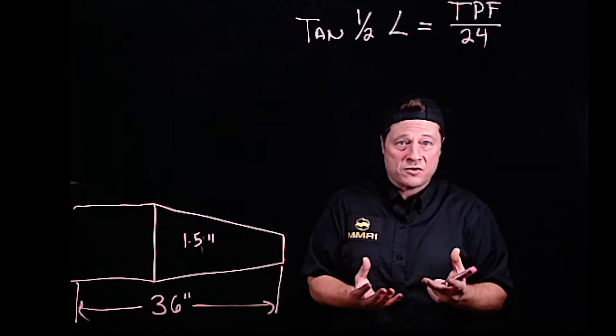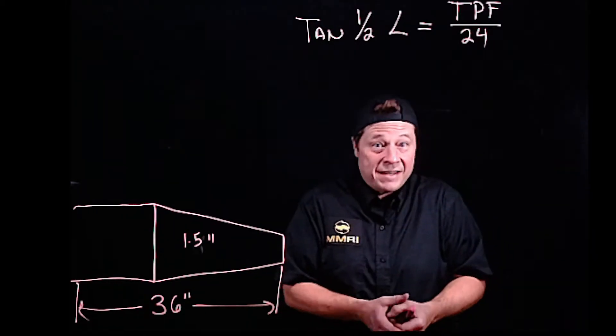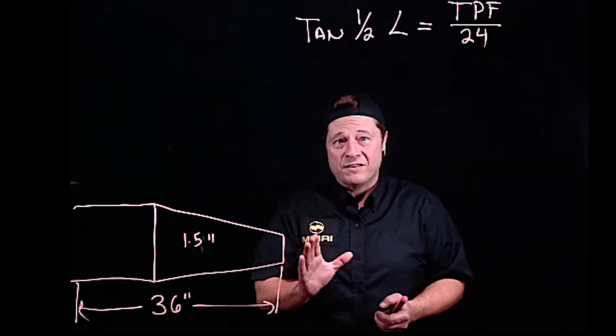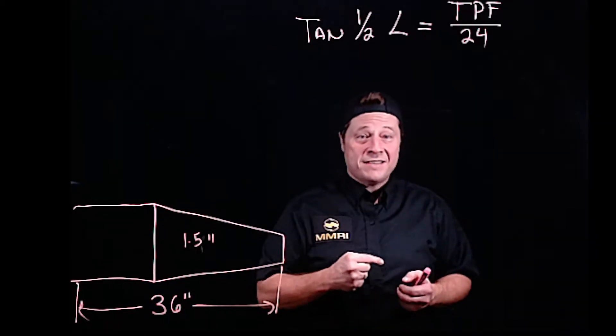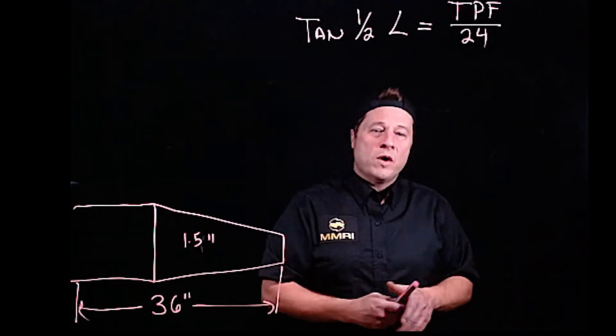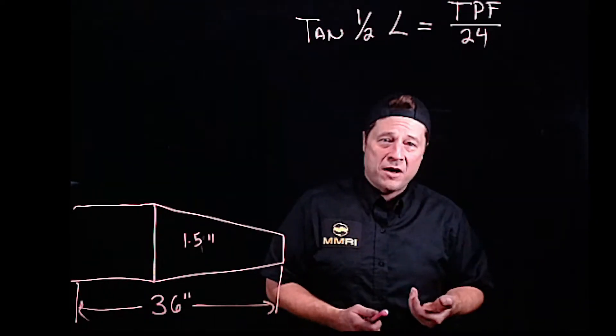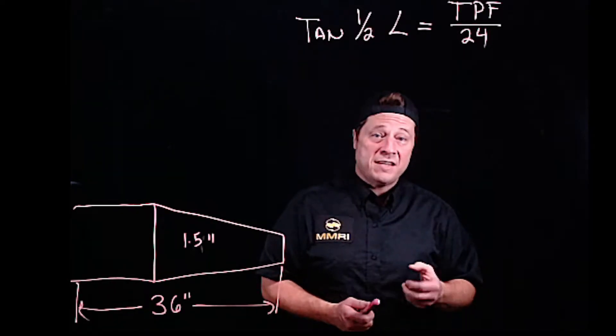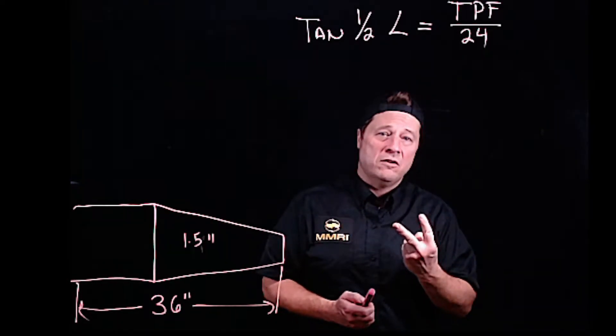It only makes sense—if I engage on one side and take off 0.001 on one side, the material's spinning, so it takes off 0.001 on the other side as well. Whatever you dial in on your compound rest, the machine takes twice that material off.